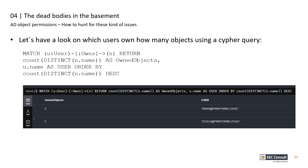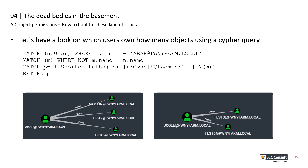After obtaining users that have ownership of other objects, let's visualize what objects they own. We can use the BloodHound GUI to run Cypher queries and visualize which AD objects the identified users own, getting a nice overview of the ownership permissions.